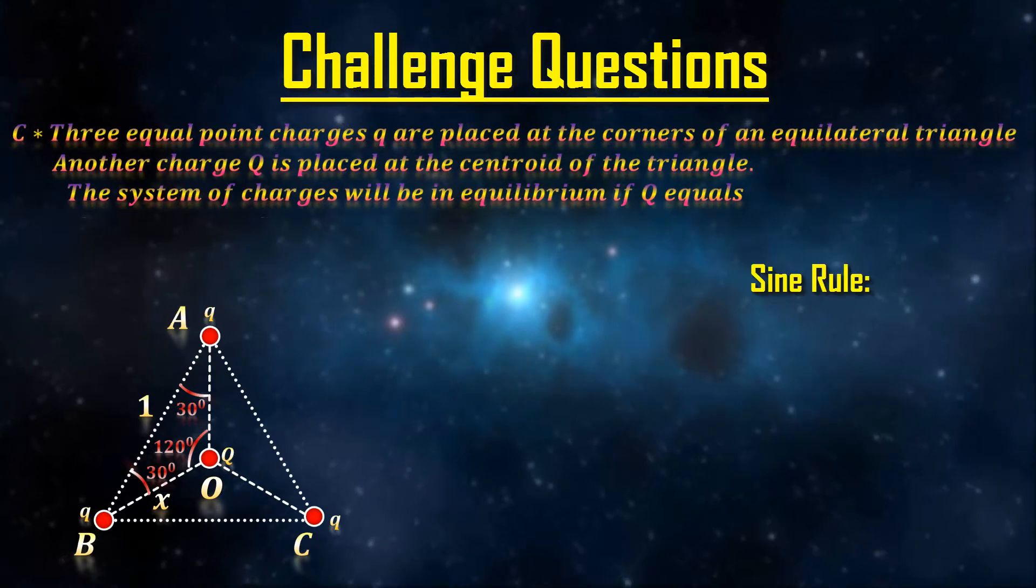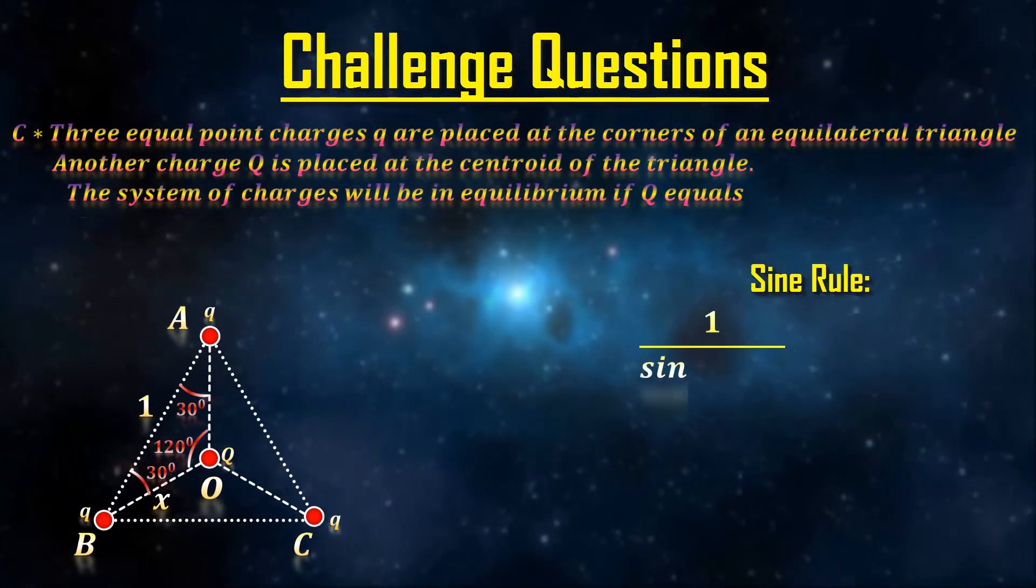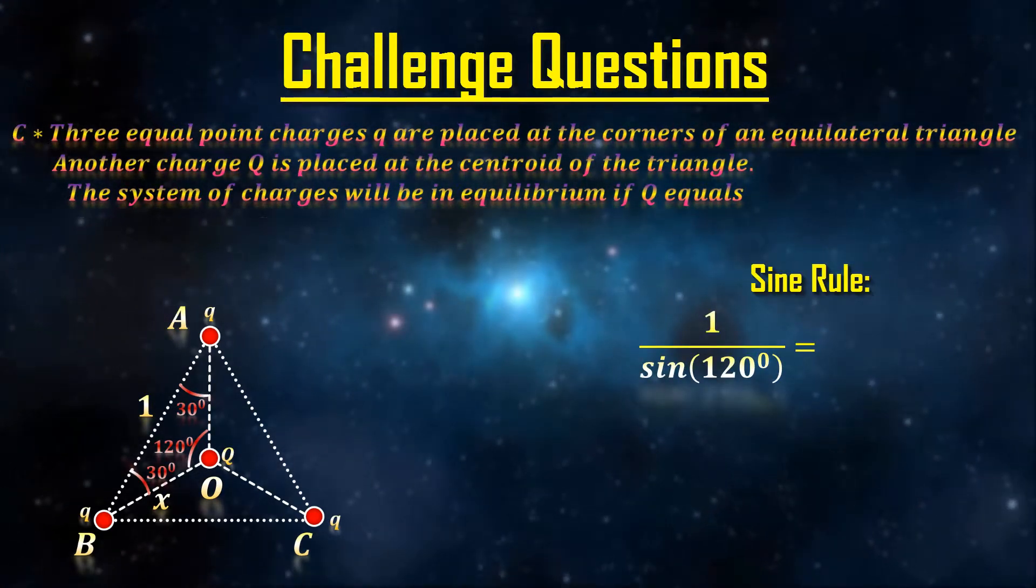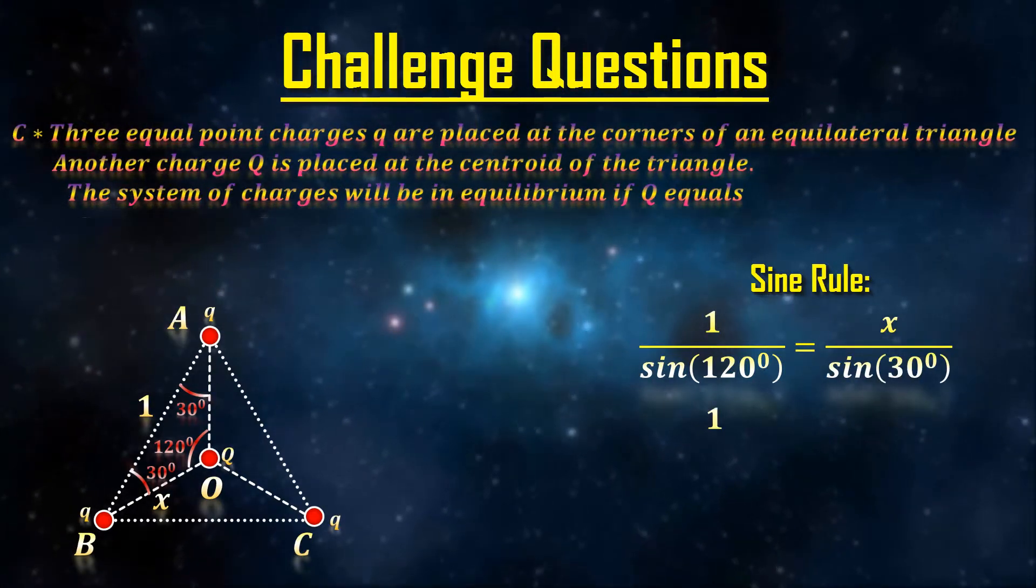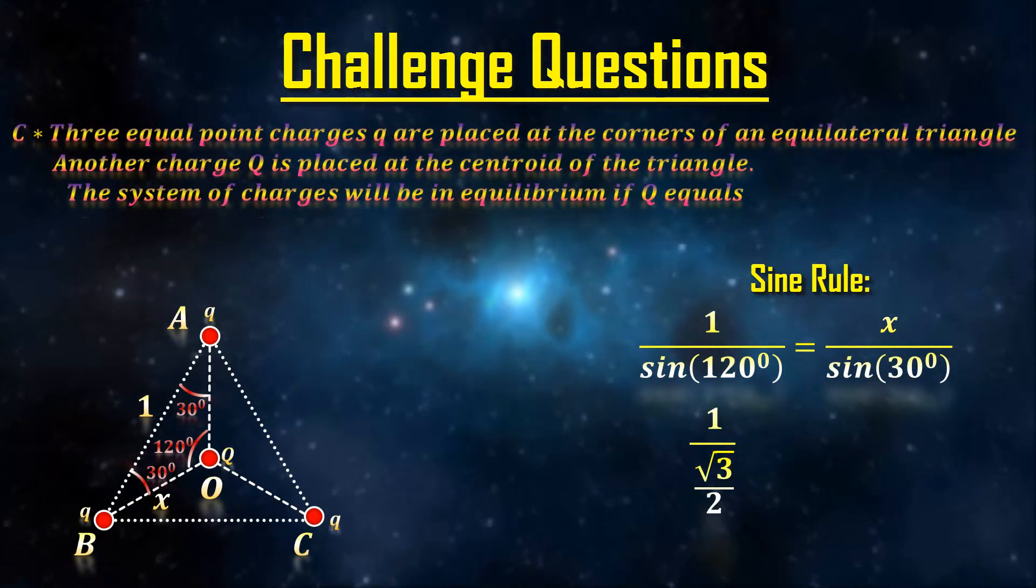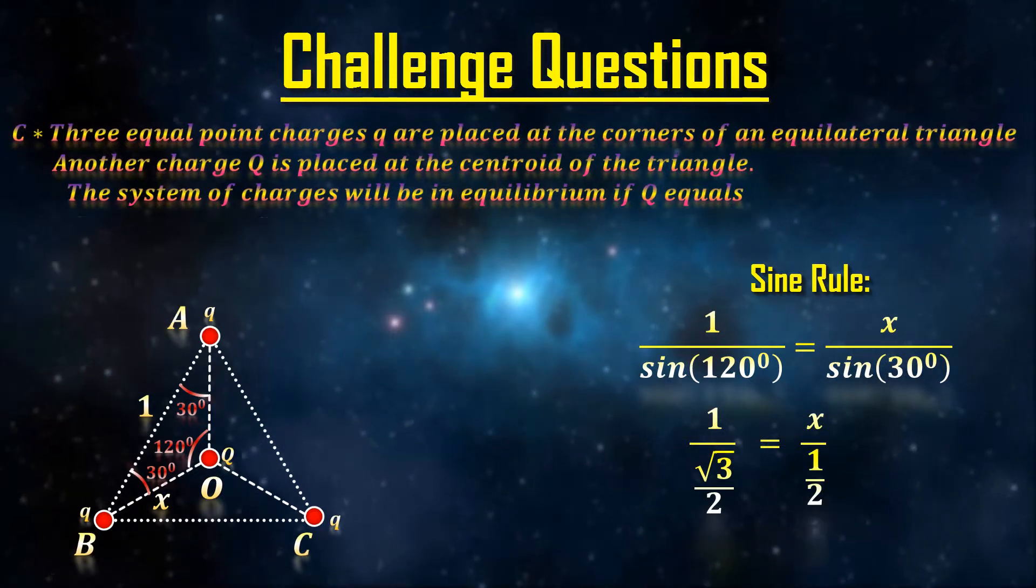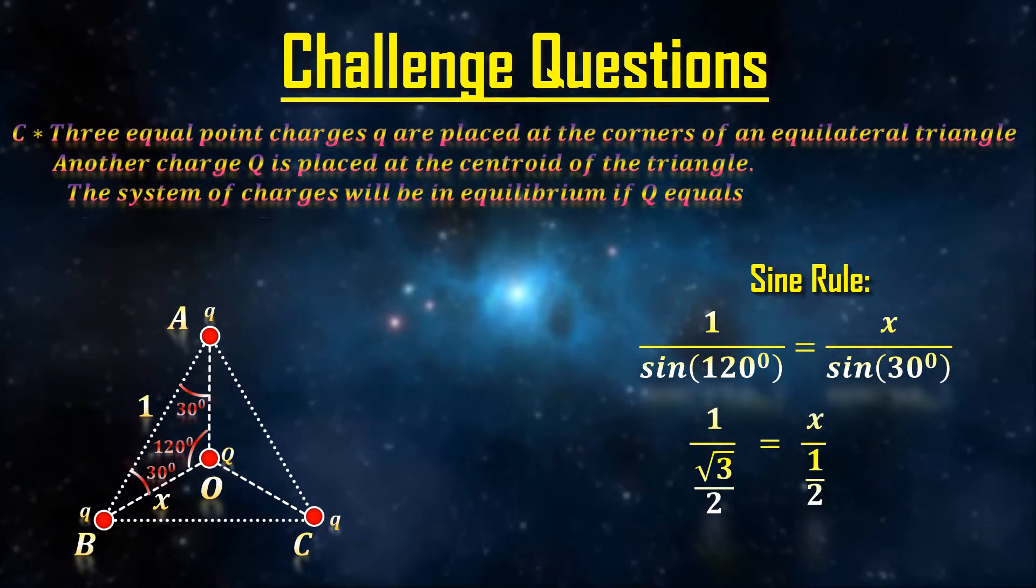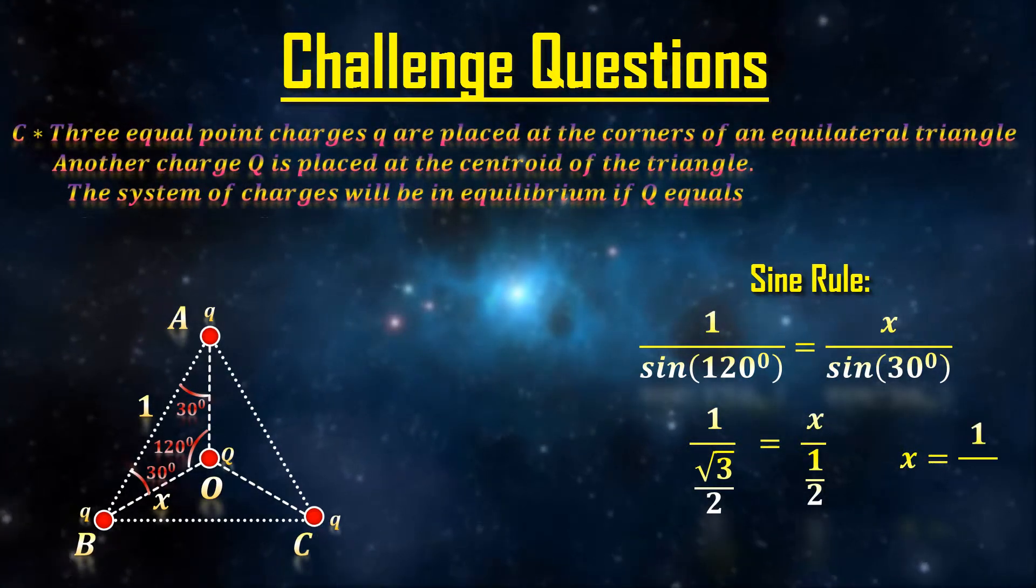Now, we can use sine rule. 1 divided by sine 120 equals X divided by sine 30. Or 1 divided by root 3 by 2 equals X divided by half. Solving this, we get X equals 1 divided by root 3.